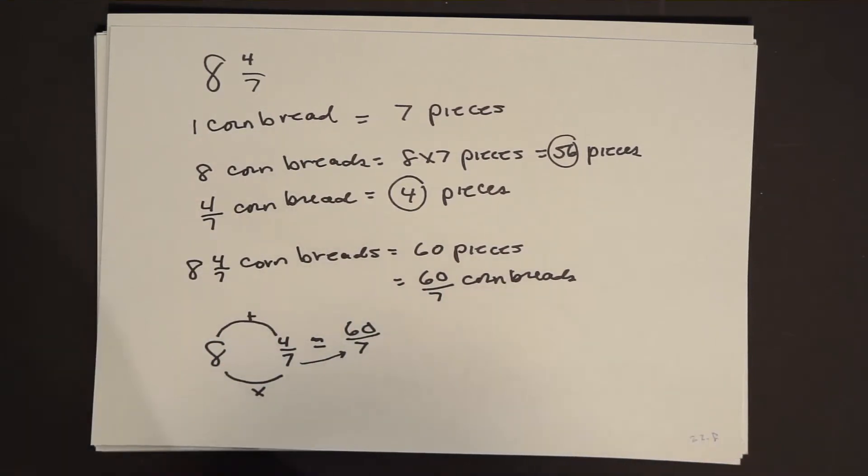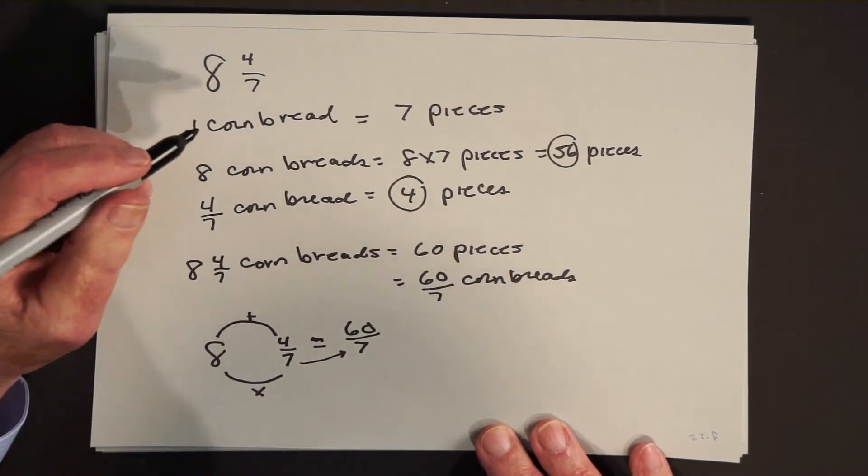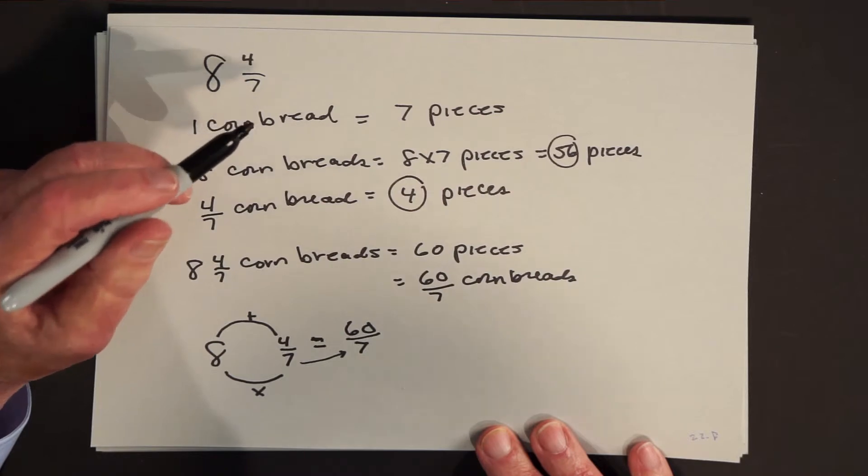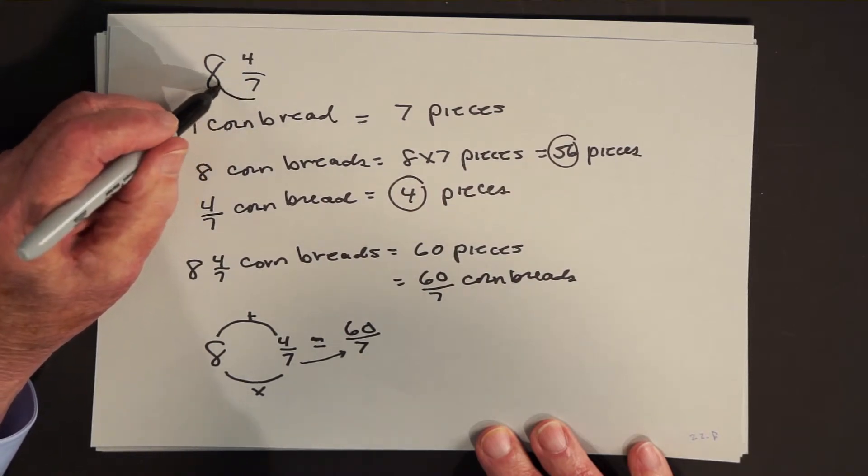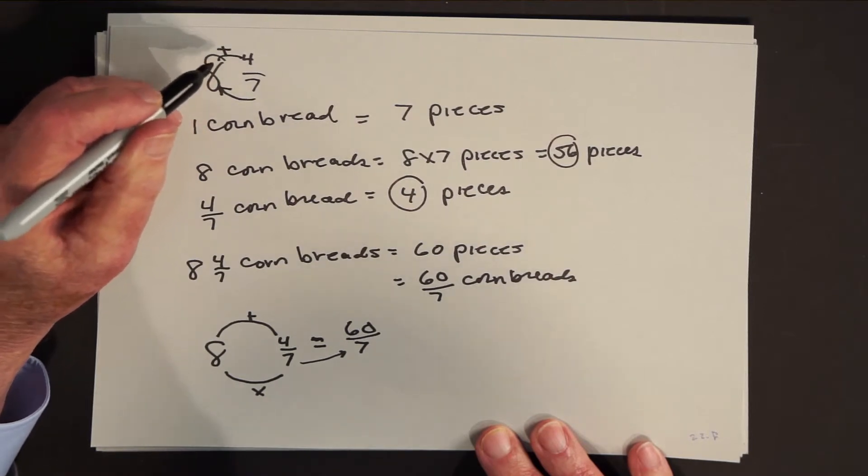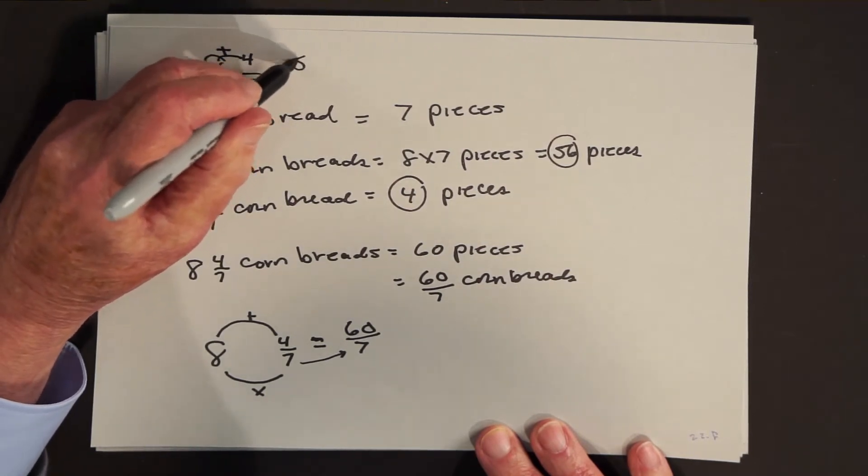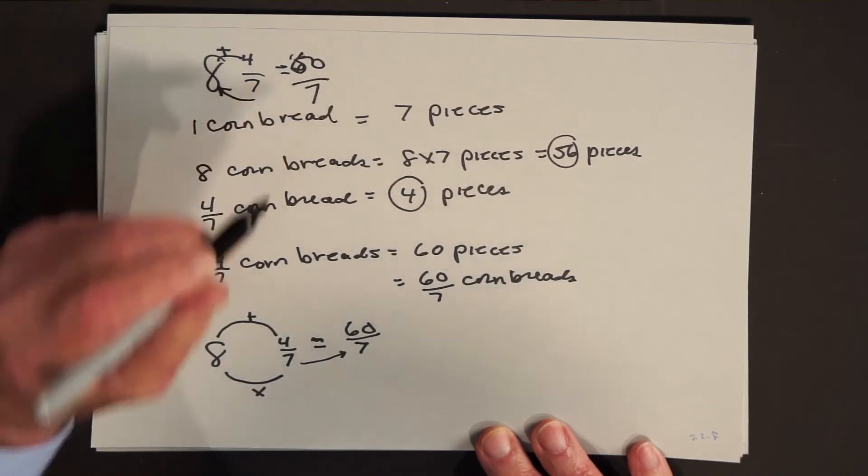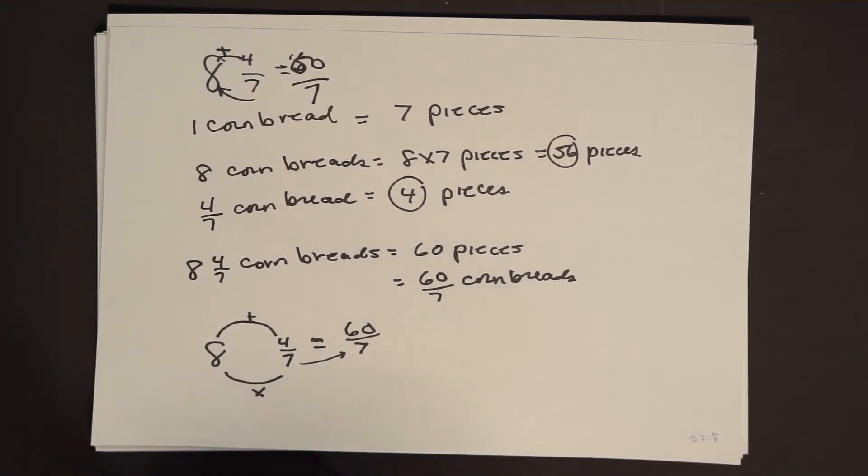And if you look through these steps, you'll notice that what we did in effect was we said, well, since each cornbread is divided into 7 pieces, 8 cornbreads would be 56 pieces, plus 4 more pieces is 60 pieces. And another name for a piece is 1 of what it takes 7 of to make the cornbread.